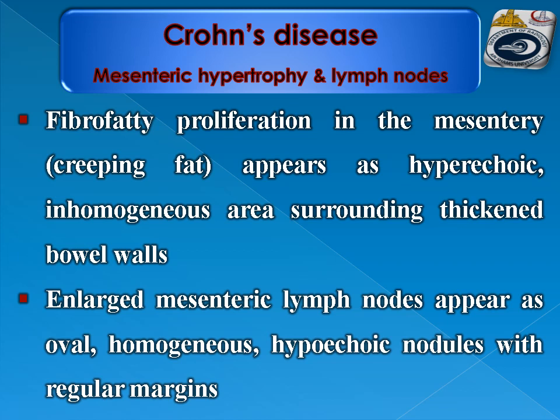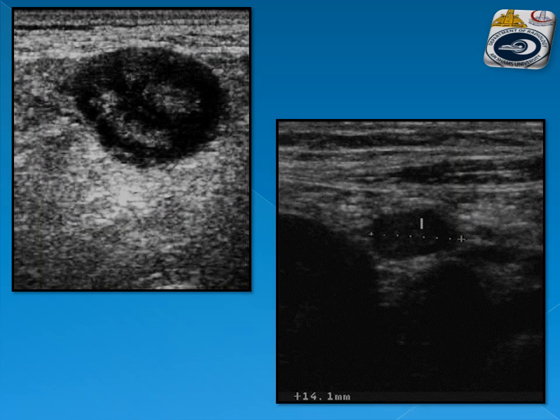Mesenteric hypertrophy and lymph nodes: fibrofatty proliferation in the mesentery, called creeping fat, appears as hyperechoic inhomogeneous area surrounding the thickened bowel walls. Enlarged mesenteric lymph nodes appear as oval homogeneous hypoechoic nodules with a central fatty hilum and regular margins. An example shows enlarged mesenteric lymph nodes with central fatty hilum and hypoechoic peripheral cortex.